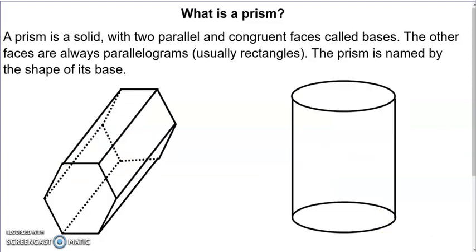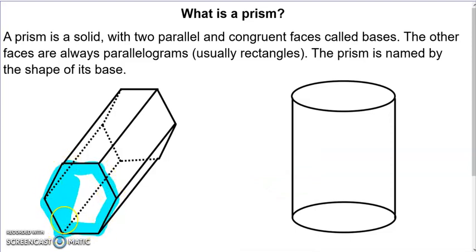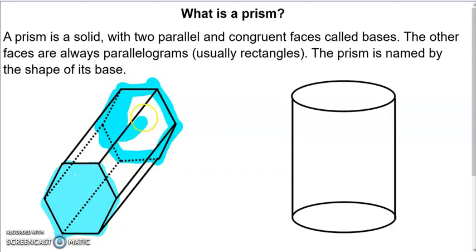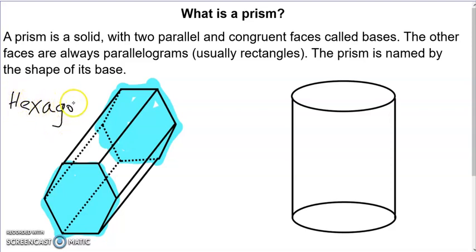We have a couple more to look at. If we take the one on the left and count the number of sides on the base, we get one, two, three, four, five, six — six sides. And on the back base, again six sides. Six sides is a hexagon, so this is a hexagonal prism — hexagonal being the adjective form of hexagon. And this one with circles on the top and bottom is a circular prism, which we call a cylinder.